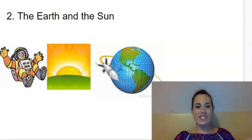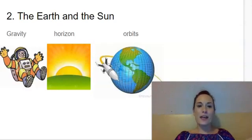We are on Knowledge Six, Lesson Two, The Earth and the Sun. Our first vocabulary word is gravity. Say gravity.